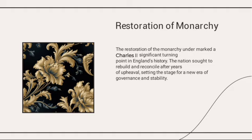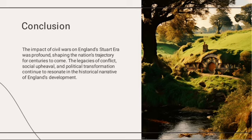However, after approximately eleven years of this interim period, there was a restoration — the restoration of the monarchy. The restoration of monarchy under Charles II marked a significant turning point in England's history. The nation sought to rebuild and reconcile after years of upheaval, setting the stage for a new era of governance and stability, moving England into a new landscape of prosperity and growth, both positively and at times negatively, from Charles II onwards.